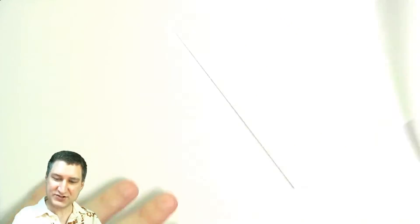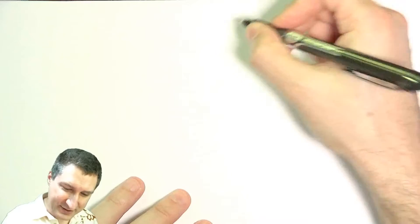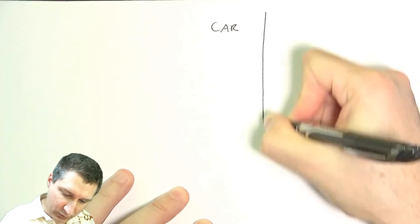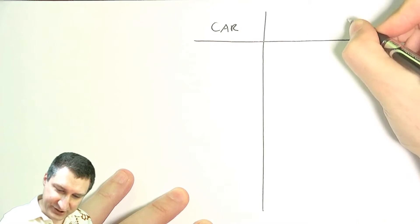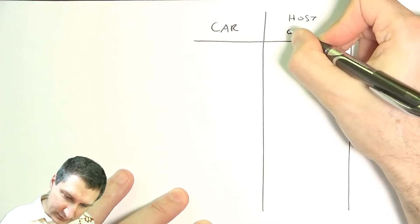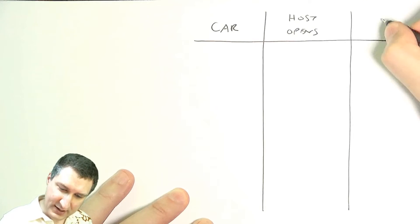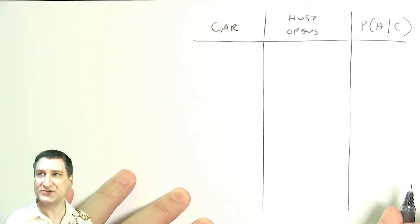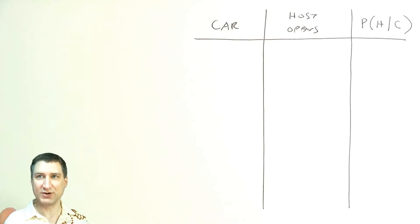There are like a zillion Monty Hall videos online, so if you don't like mine, you can find some other one. But I think the easiest way to understand it is to quickly make a table of the door that the car is actually behind, the door that the host opens, and the probability of the host opening that door given where the car is. So we're kind of making a table of conditional probabilities.